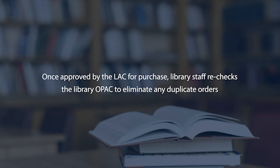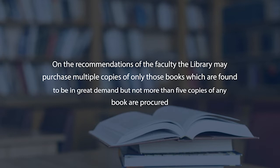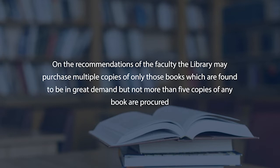Once approved by the library advisory committee, the library staff rechecks the library OPAC to eliminate any duplicate orders. The library then prepares the final list of books and obtains final sanction from the librarian, rector, or vice chancellor as per the financial powers delegated to each authority. On the recommendation of faculty, the library may purchase multiple copies of books found to be in great demand, but not more than five copies of any book.